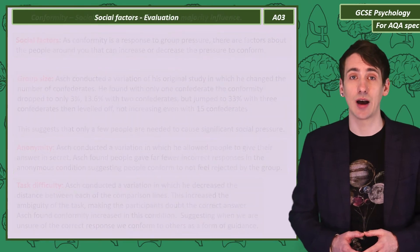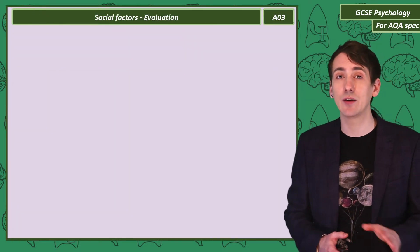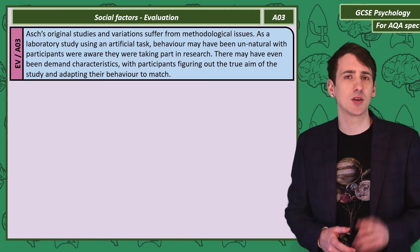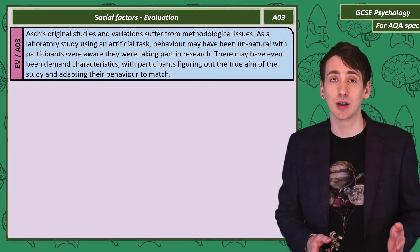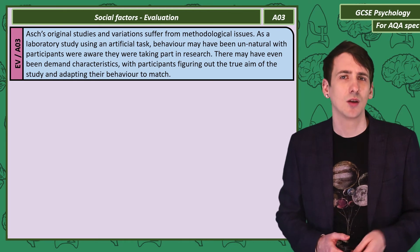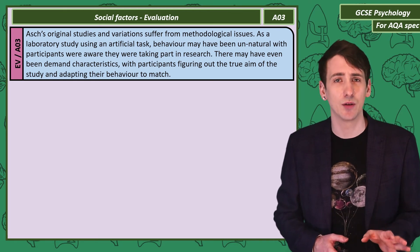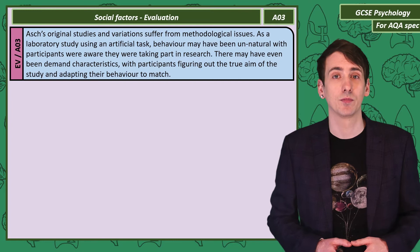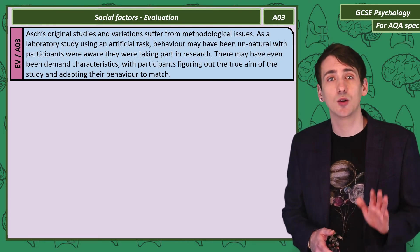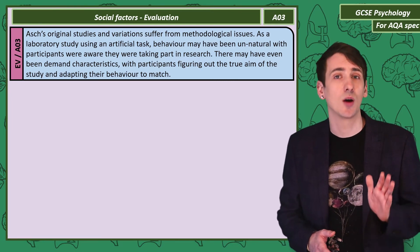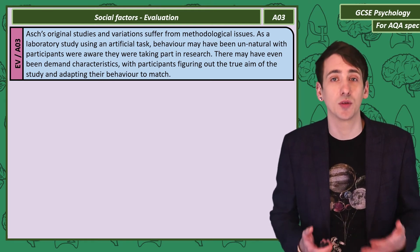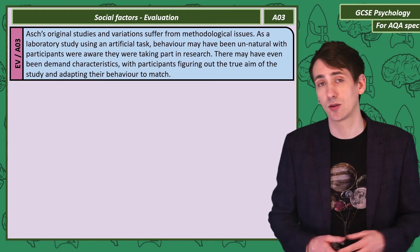Let's consider some evaluations of Asch, including the variations on his original study. There are problems with Asch's methodology — it was a lab study with a very unusual, artificial task, so we can question if the behaviour observed was really natural. Some participants, knowing they were part of a study, might have guessed the other participants were set up to give the wrong answer, and just gone along with what they thought was expected of them — demand characteristics.